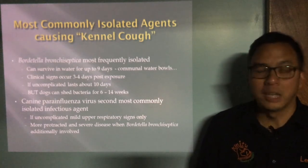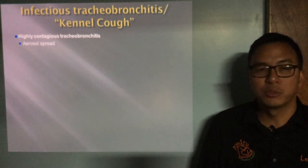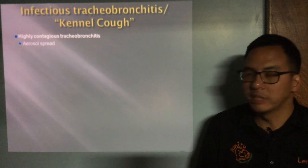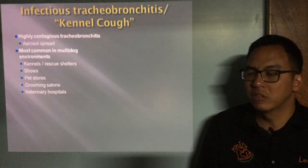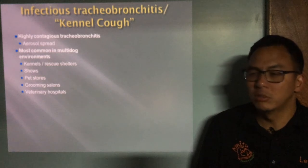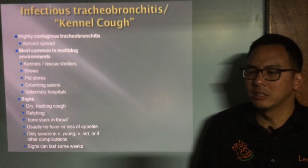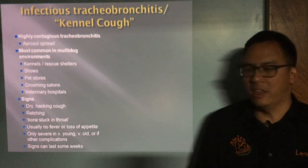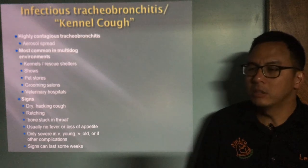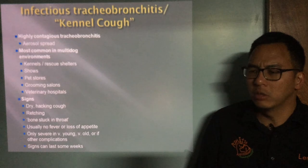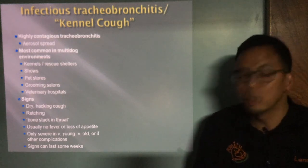Kennel cough is a highly contagious tracheobronchitis spread by aerosol — meaning dogs sharing the same airspace. Separating dogs with a fence is not sufficient. It is most common in multi-dog environments like kennels, rescue shelters, dog shows, pet stores, grooming salons, and veterinary hospitals. The most common sign is a dry hacking cough that owners describe as a retching sound or as if a bone is stuck in the throat. There is usually no fever or loss of appetite. It is only severe in very young, very old, or immunocompromised animals.